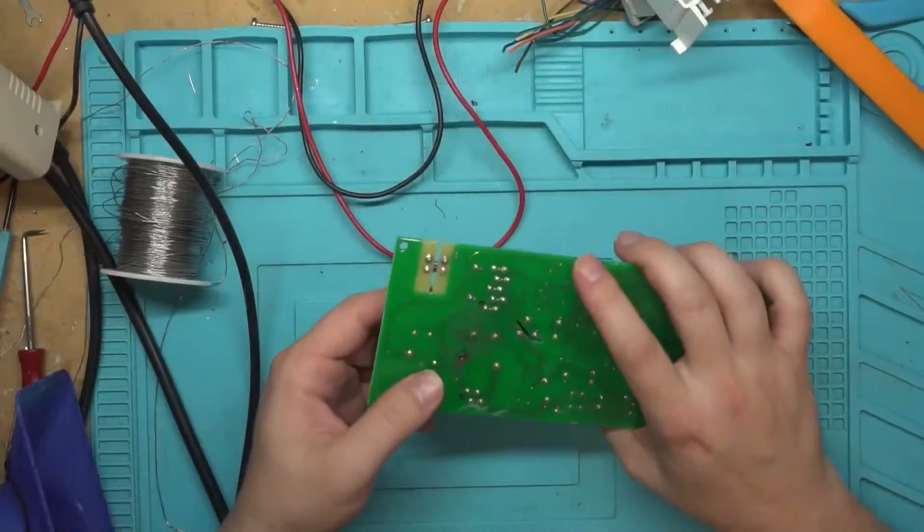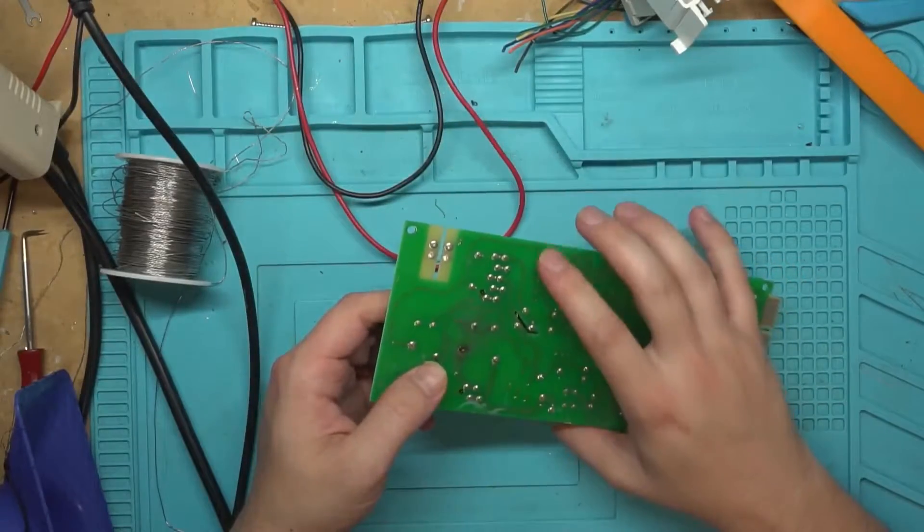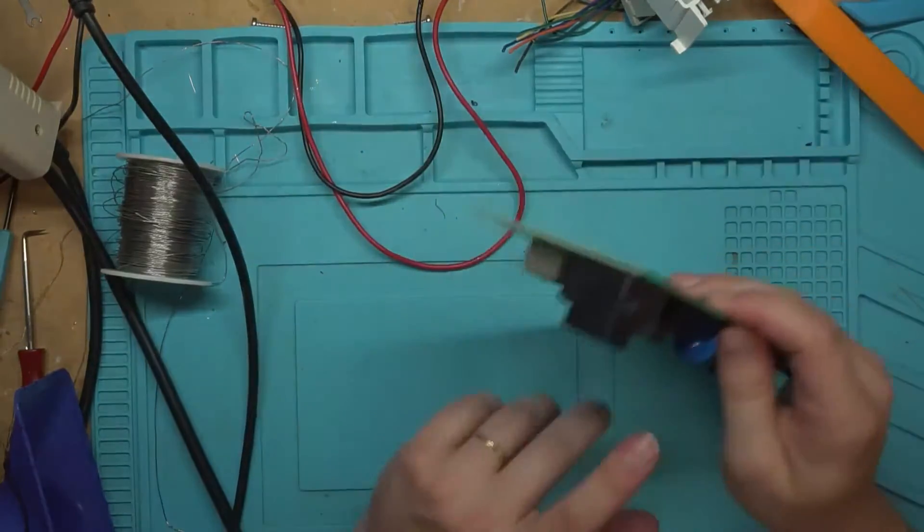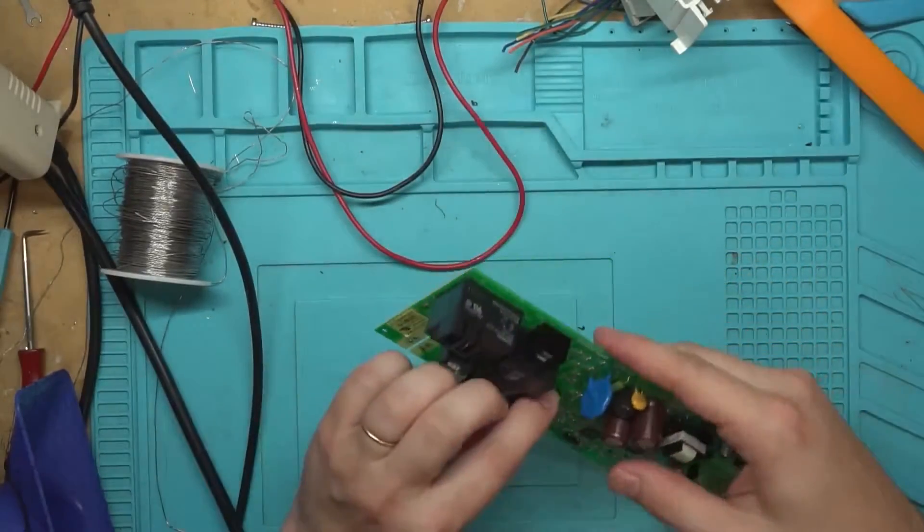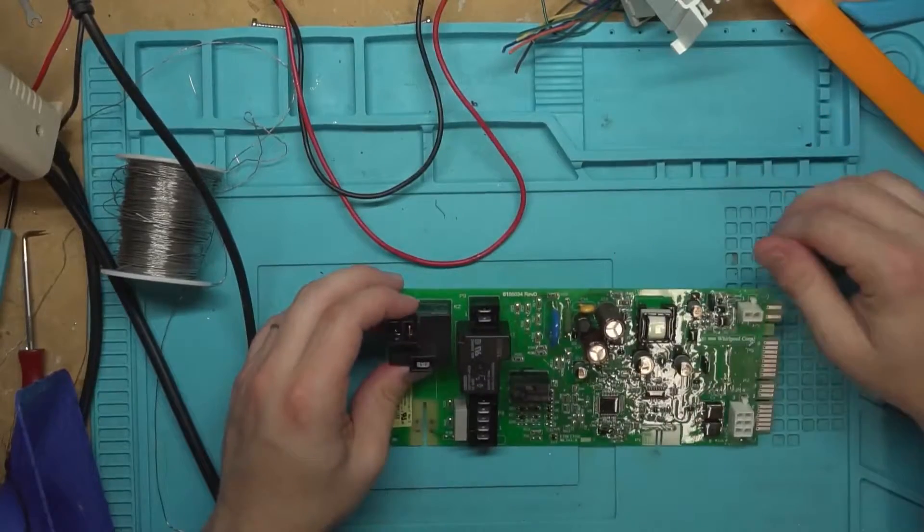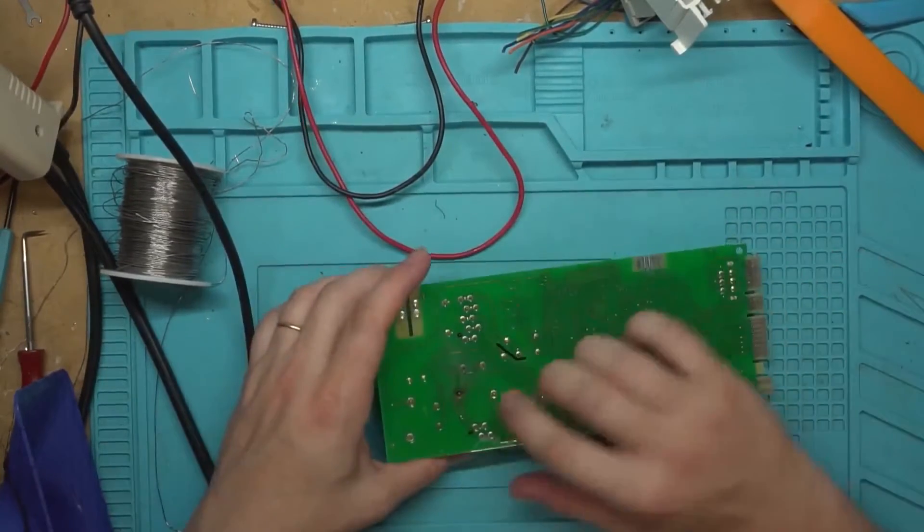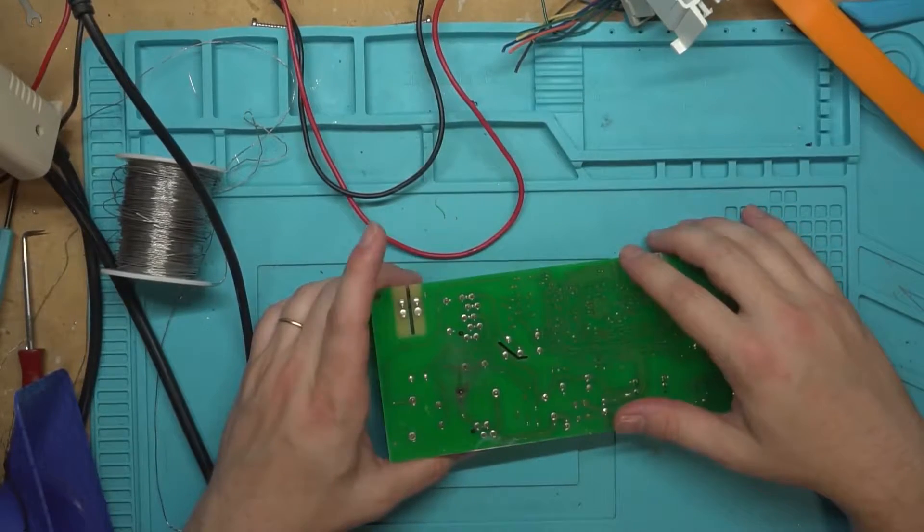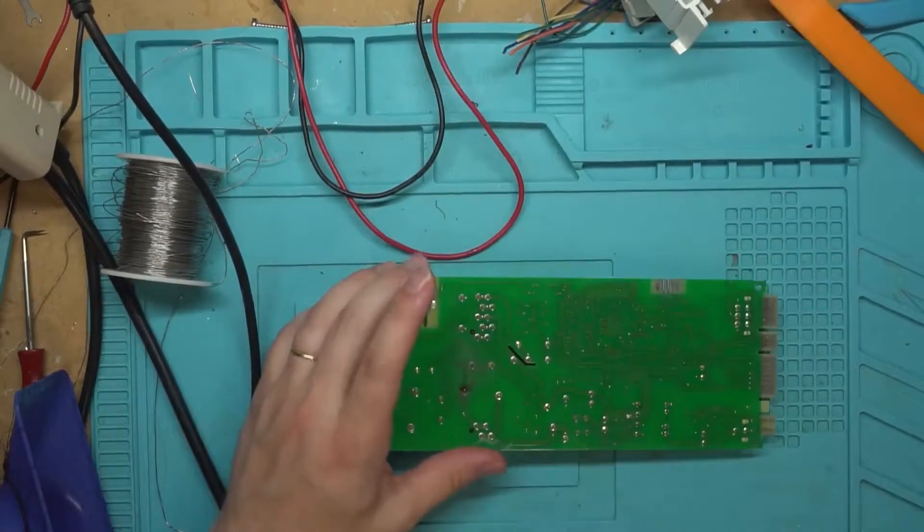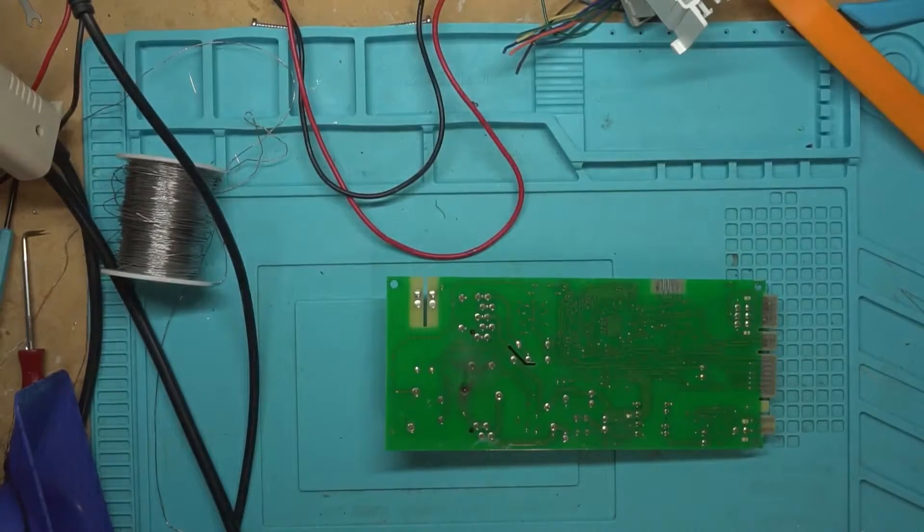This is where it connects to the plug. It looks like I'm not seeing anything else shorted on here, so I'm thinking if we just fix and repair this trace here, we'll fix the board. So we're gonna try doing that. Let's first just clean it off with a little bit of rubbing alcohol to see what we have left.